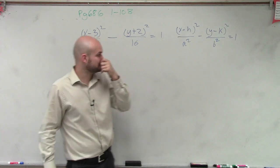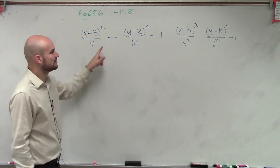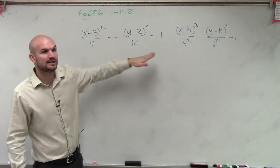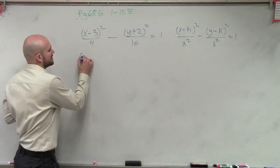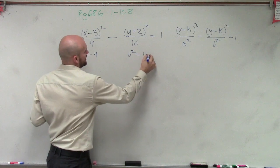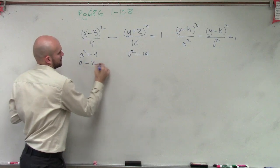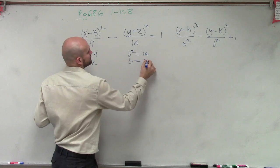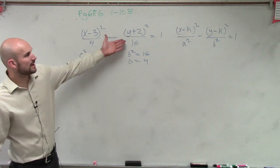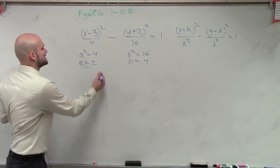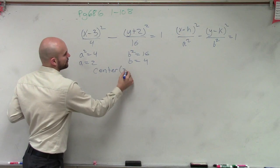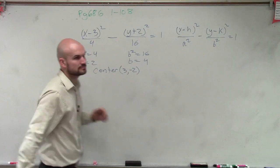Horizontal — very good. So since we know that's horizontal, we know that this is your a² and this is your b². So we can say a² equals 4 and b² equals 16. Now we also know h and k, so therefore we can say the center is going to equal (3, negative 2).